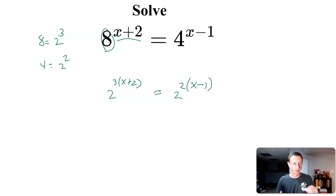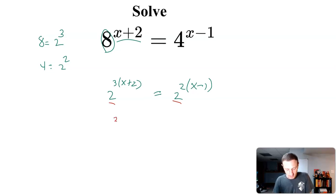So since I was able to rewrite them, now I have the same bases. So if the bases are the same, then that means the exponents have to be equal to one another. So I'm just going to set the exponents of 3 times x plus 2 equal to 2 times x minus 1.